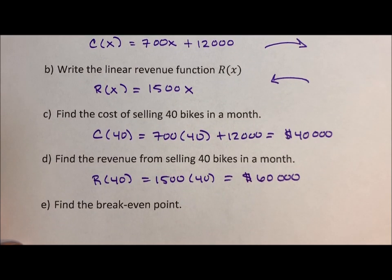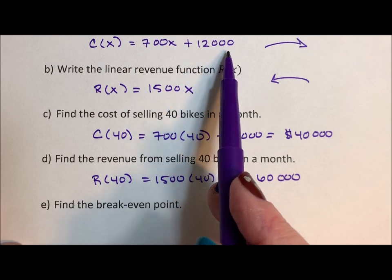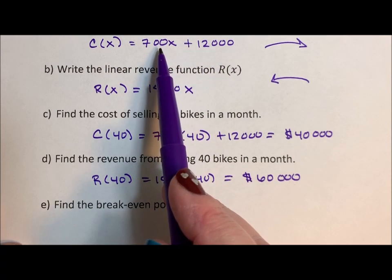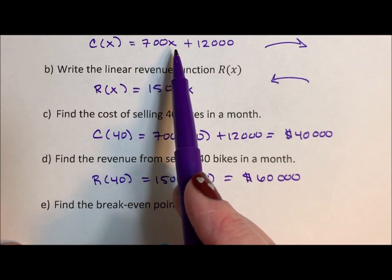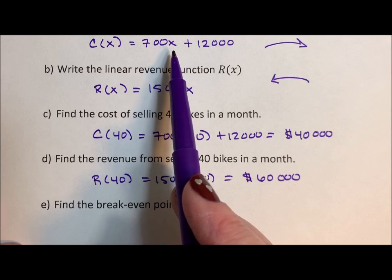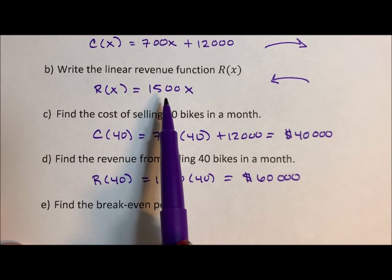Well, the break-even point, when the month begins, the cost, we start off with this $12,000. And we start producing bikes. And we are in the red, we are spending and spending and spending. And then we start to sell bikes. But we're still in the red.